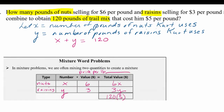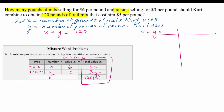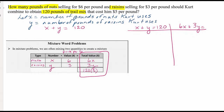This gives us our second equation. Using the substitution method, we have x plus y equals 120 on the left side, and our second equation is 6x plus 3y equals 600 — because 120 pounds times $5 per pound equals $600.